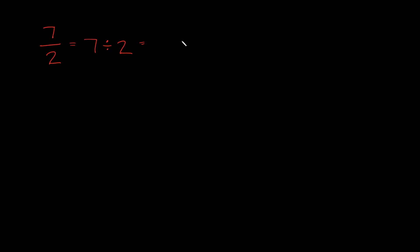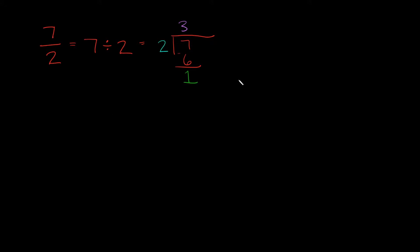Let's just solve this. What is 7 divided by 2? Well, 2 goes into 7 three times, and then 3 times 2 is 6. So 7 minus 6 is 1. Now that we did this division problem, we have all of our pieces to construct our mixed number.